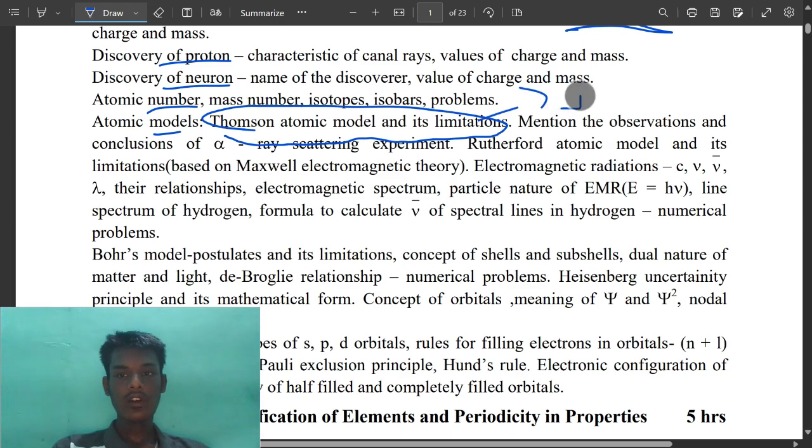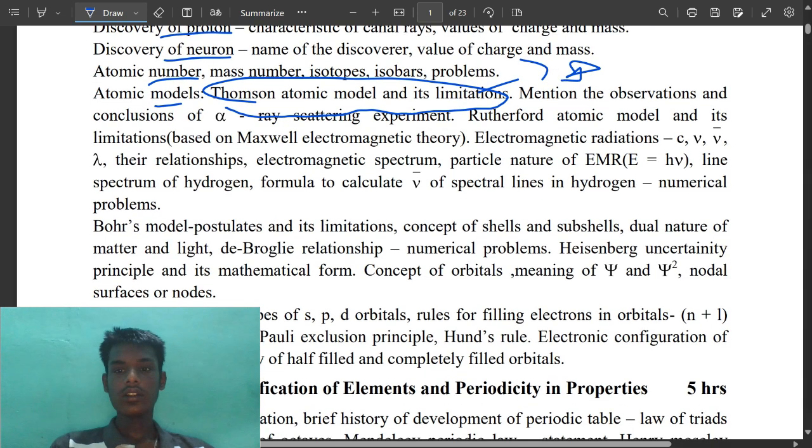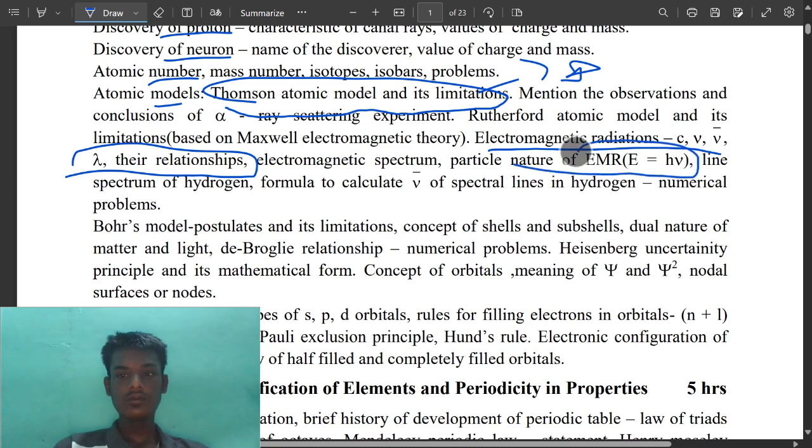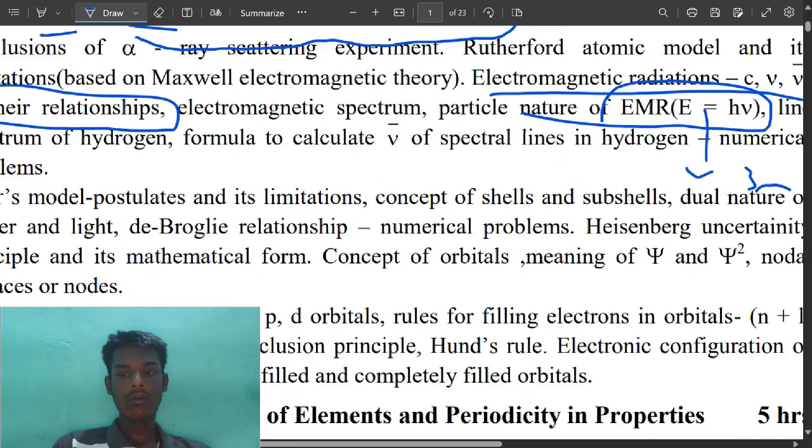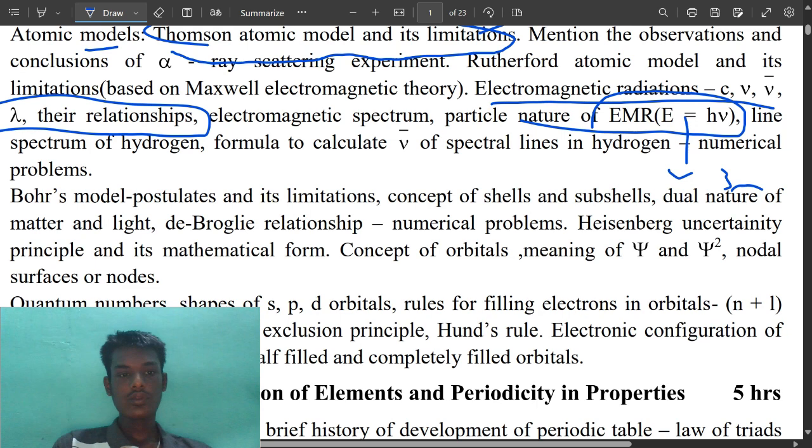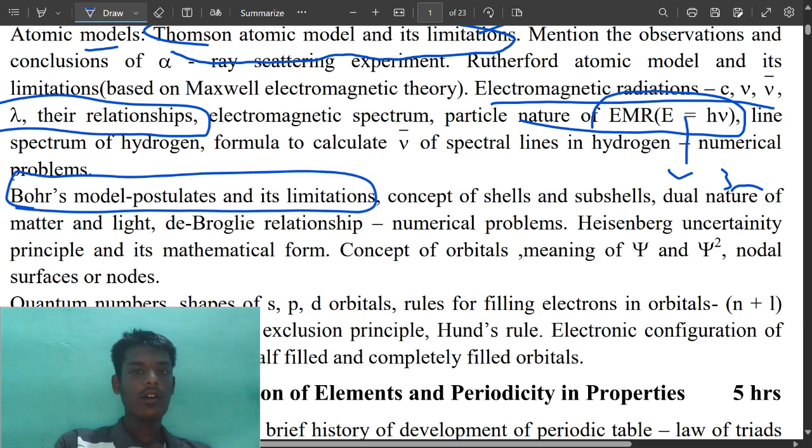This is very important. These relationships - gamma, lambda - very very important. This relationship will ask for three mark size, very important to derive the form. Bohr's model postulates, very important. These two are important - Heisenberg and Bohr, important interlink guys. Concept of shells and subshells is also important.